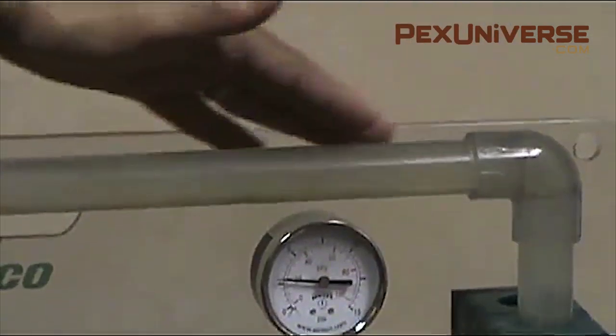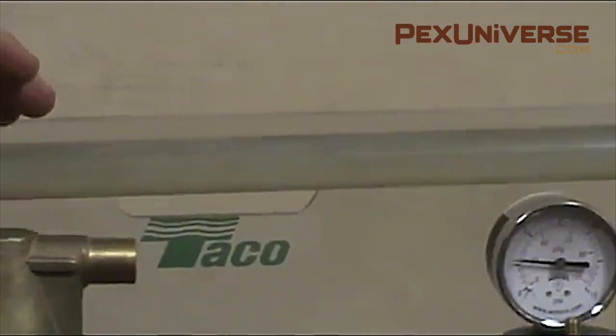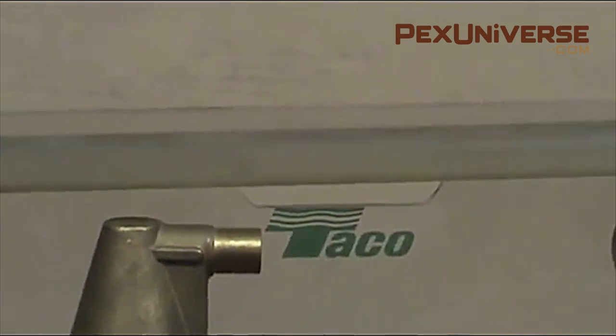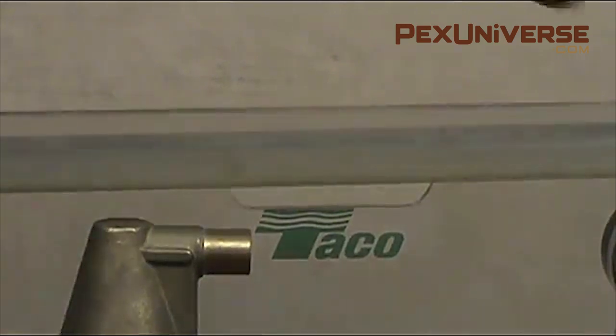When iron parts rust the rust gets in the water and when rust is in the water it lowers its heat transfer ability which again reduces the efficiency of the system. Rust would impede the flow of energy transfer if it's in there.